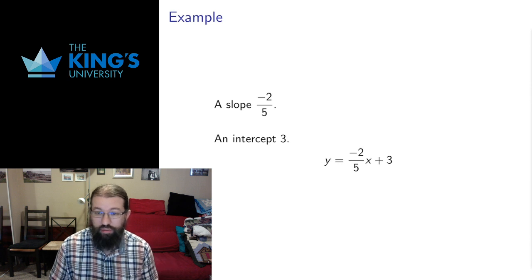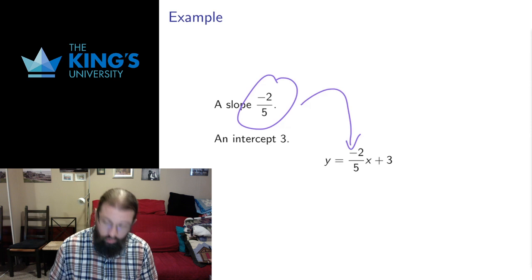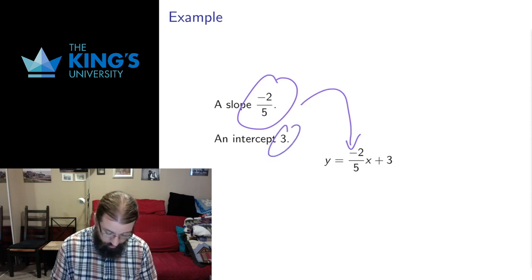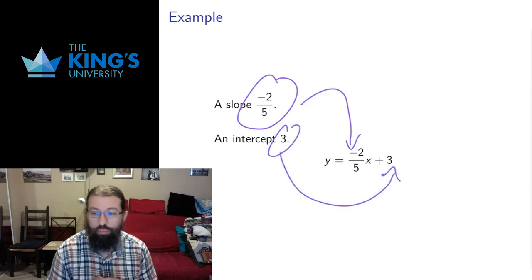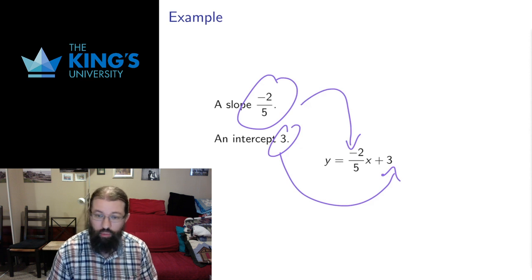If we're given the slope and the intercept, then everything is automatic. We just take the slope, put it in where m should be in the slope-intercept form, take the intercept, put it in where b should be, and there's your equation of the line. That's the simpler situation if we're just explicitly given the slope and the y-intercept.